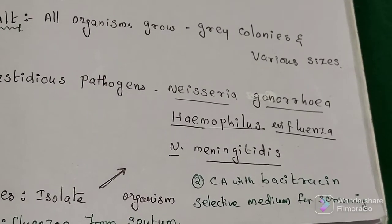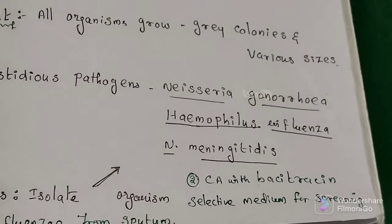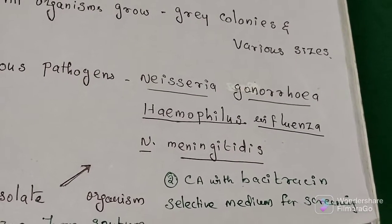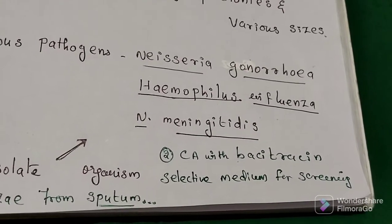Then chocolate agar with bacitracin, that antibiotic bacitracin acts as a selective medium for screening Haemophilus influenzae.